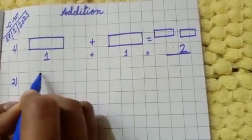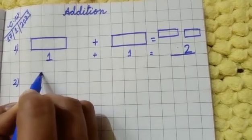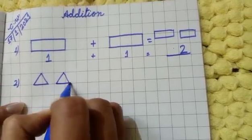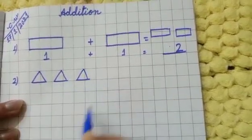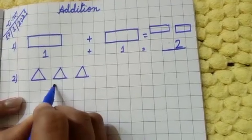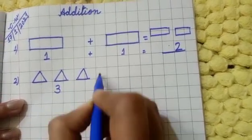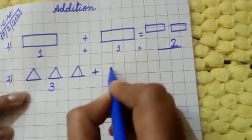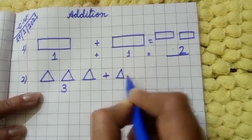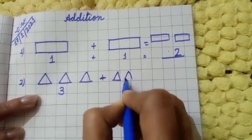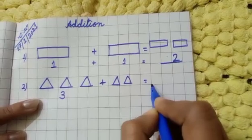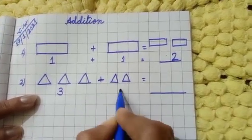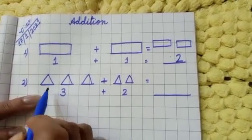Now next, I am drawing triangles. One triangle, two triangle, three triangles — so here I am writing three, then plus. Again I am drawing two triangles: one triangle, two triangles, equal to dash.